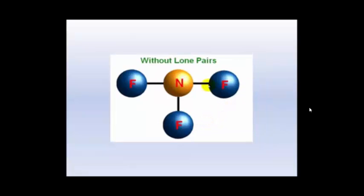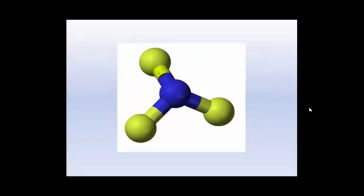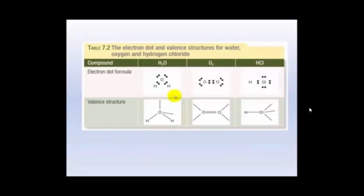If I take those away, I get a structure that looks like this. And if you're using the models, it will look something like this, but we'll get into that a little bit later on. So your electron dot diagrams look like this — this is water, and here you'll see its valence structure. All that's being done is each of those electron pairs has been replaced by one single line. We'll look at the shape of these in a couple of minutes.